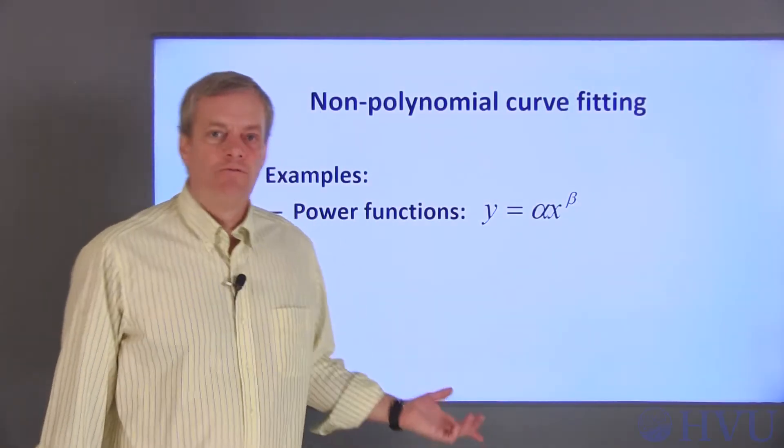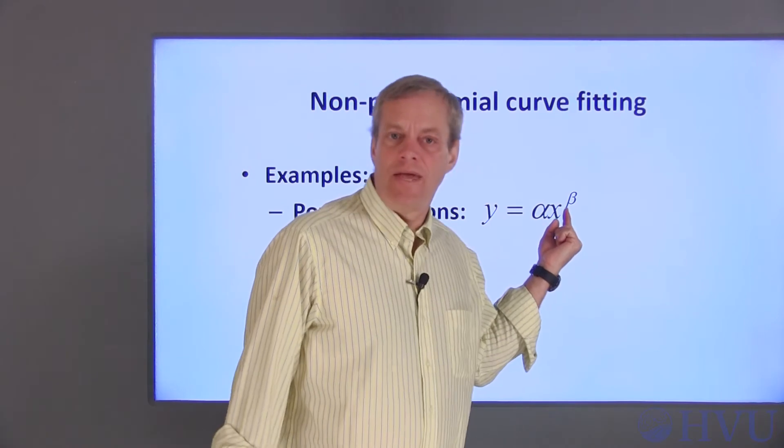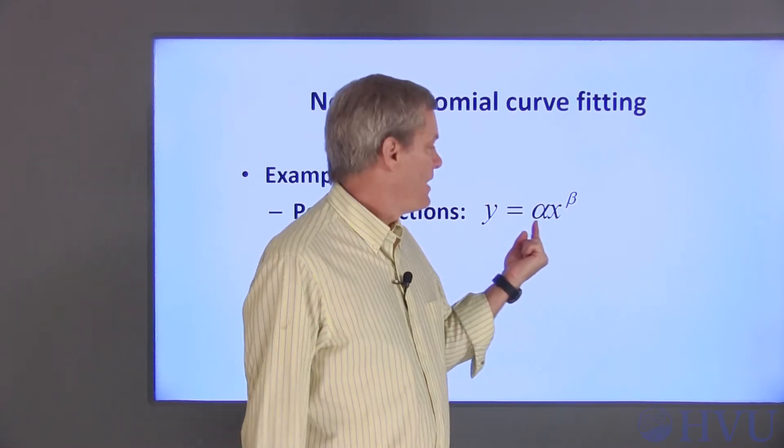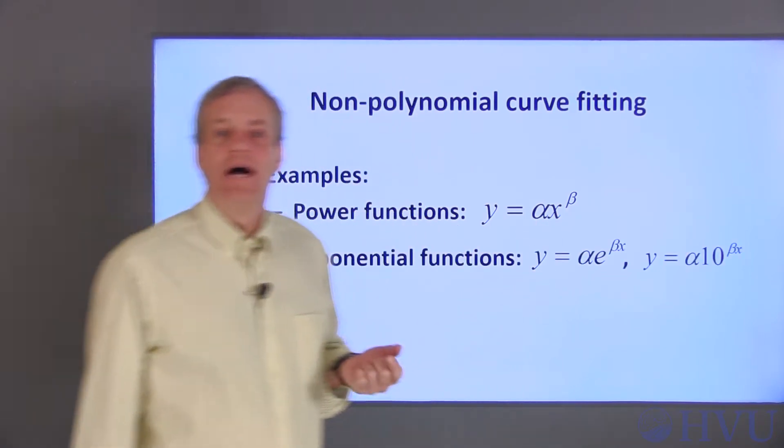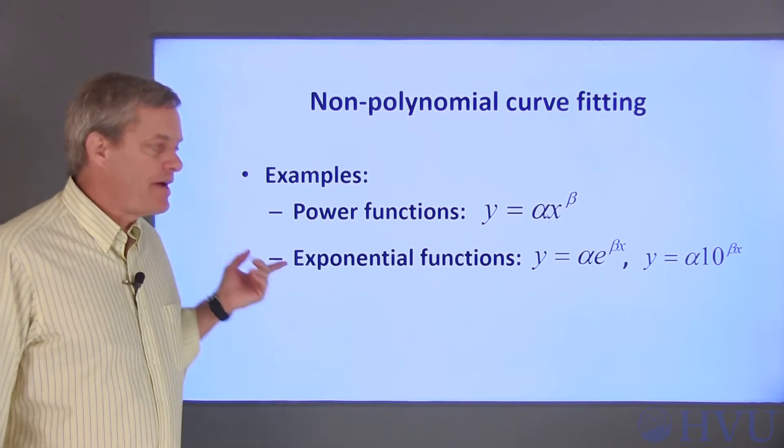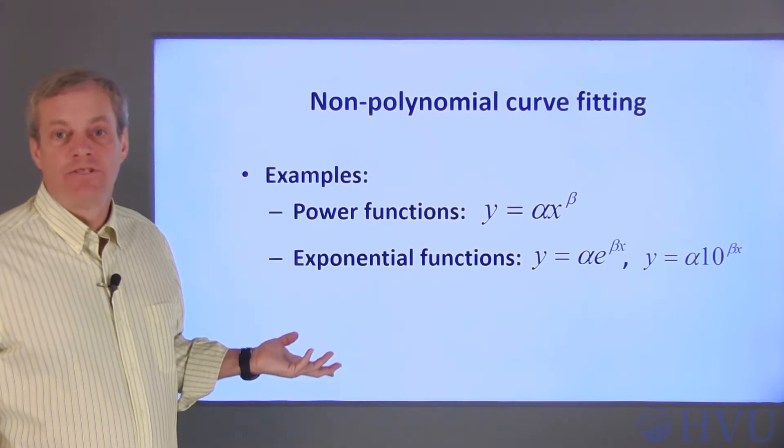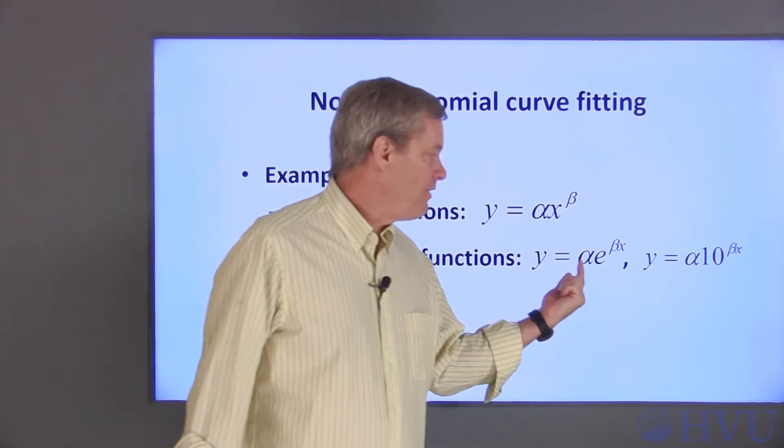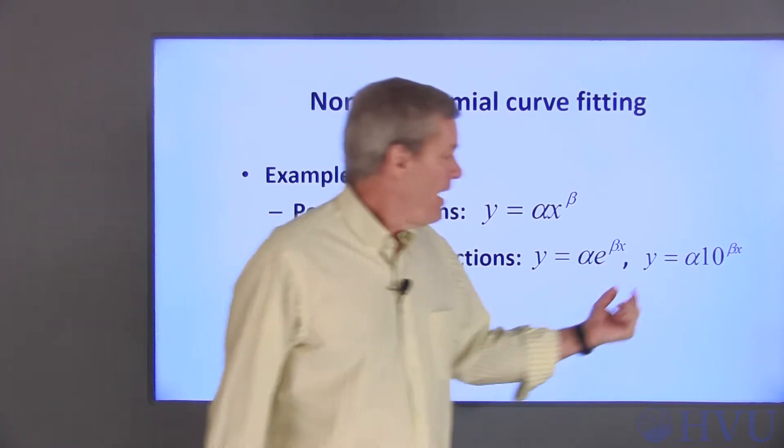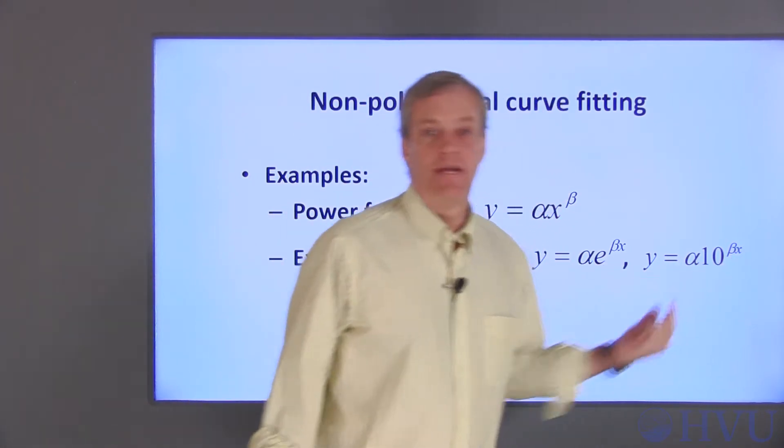Power functions, for example, are in the form of x to some power beta times a coefficient alpha. Another common class of functions are exponentials, examples of those are functions in the form alpha e to the beta x and alpha times 10 to the beta x.